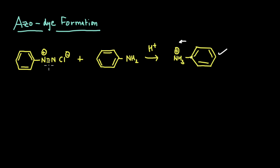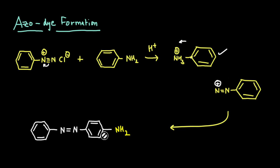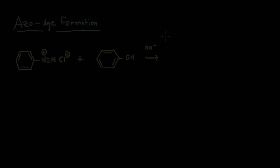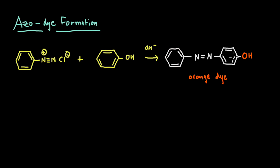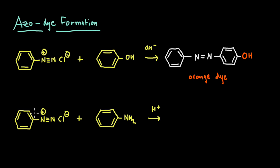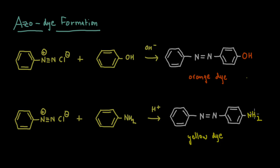We know there will be resonance here, with this bond shifting because of which we have a positive charge on this nitrogen. Because the electron density is higher at the para position, this is the electrophile which will substitute the hydrogen there. We form our product, which is the yellow dye, also called aniline yellow. So we looked at two dye formation reactions: the first was the reaction of our diazonium salt with phenol in a basic medium, giving us the orange dye also called phenol orange; and then the reaction of the diazonium salt with aniline in an acidic medium, giving us the yellow dye or aniline yellow.